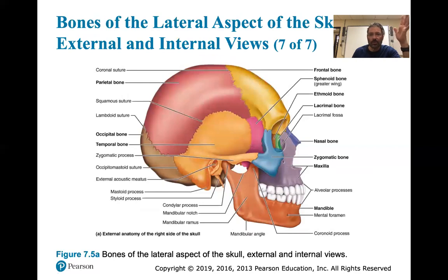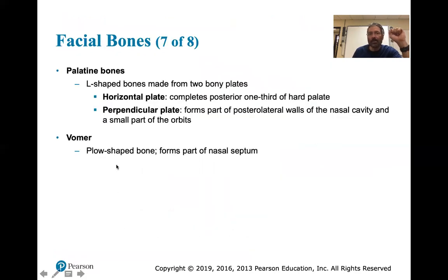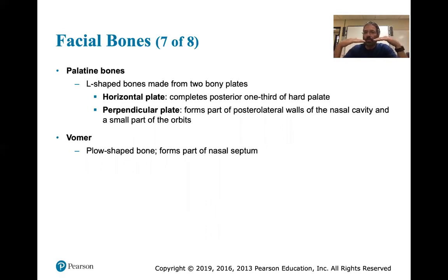Here's a side view showing all the bones. Think in 3D - what is deep to the outer wall, what's behind it, what's on the inside. The palatine bone is L-shaped, made from two bony plates including a horizontal plate - remember horizontal is always this direction.